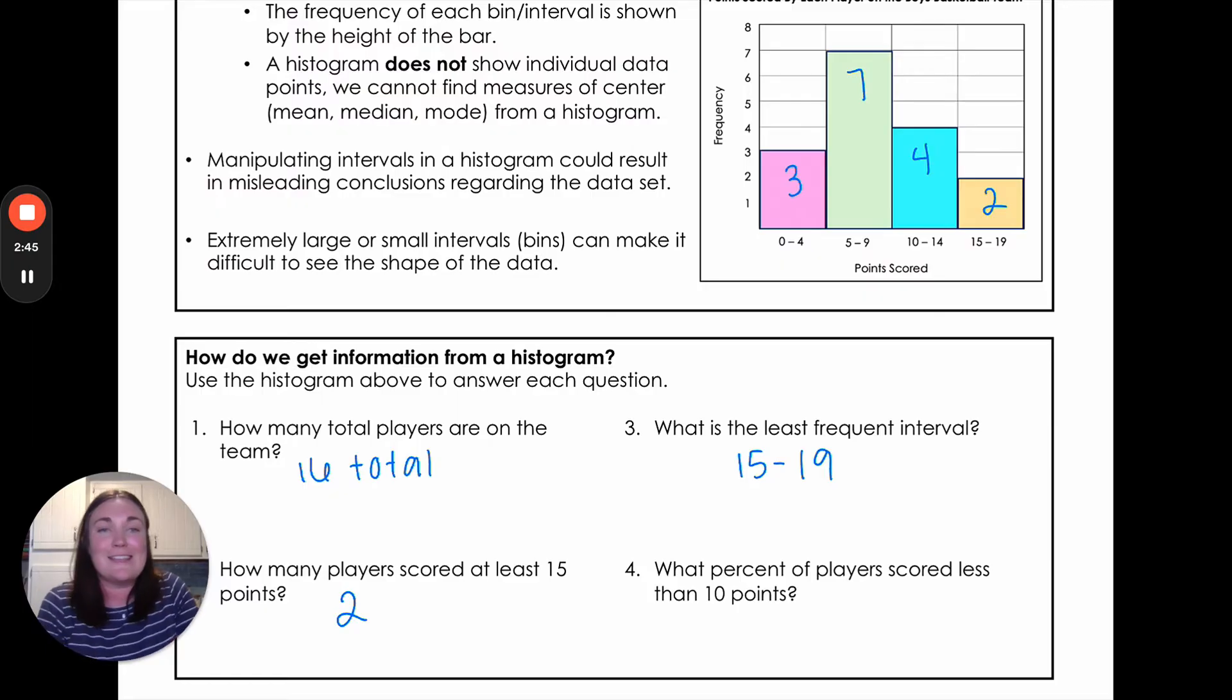All right, our last question for this histogram is what percent of the players scored less than 10 points? So if I want to do less than 10, I'm going to combine these two intervals together. Because all of these are something less than 10. So I've got seven and three gives me 10 players that scored less than 10 points, but they're not asking how many players they're asking for the percent. So I'm going to take that 10 out of 16. So I'm going to turn it into that fraction and I'm going to plug that in my calculator and I'm going to wind up with about 63 percent. So there were 63 percent of the players scored that less than 10 points.